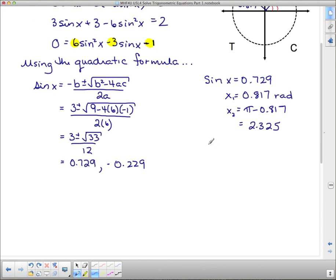Now the next one, we know that sin(x) = -0.229. So now I know what quadrant those are in.